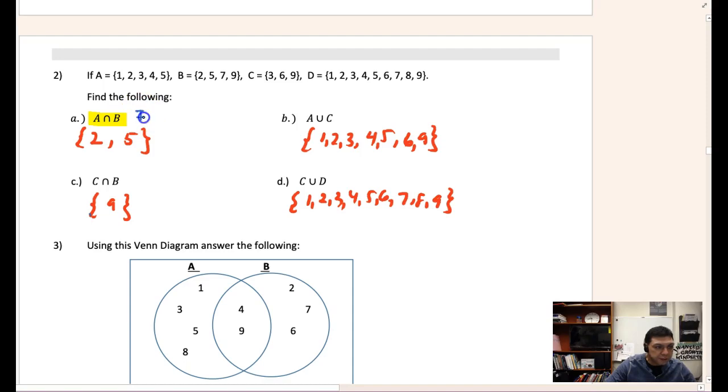So looking at this again, looking at that notation, this is called the intersection, and this one here is called the union. So you can see what we have here - the intersection of A and B means what do they have in common? I look at A and B and you can see they have 2 and 5 in common.